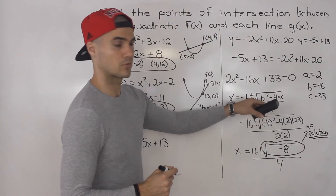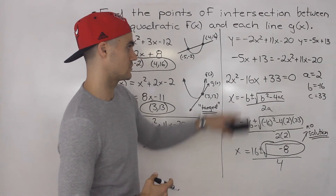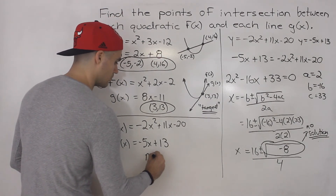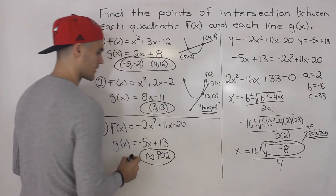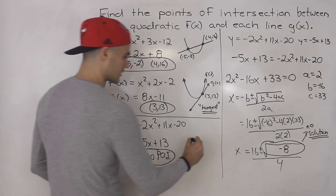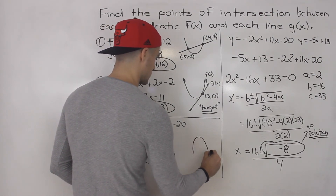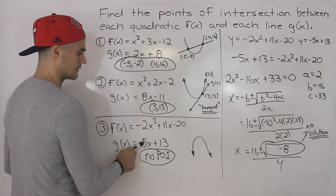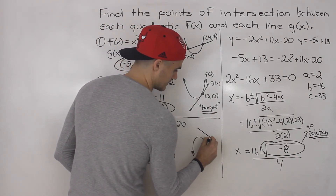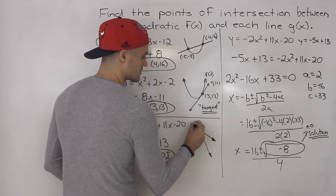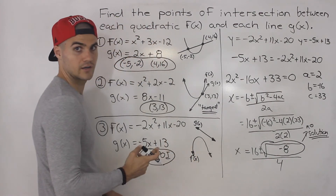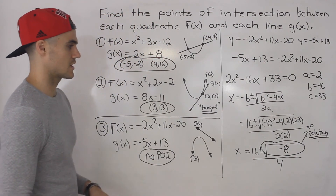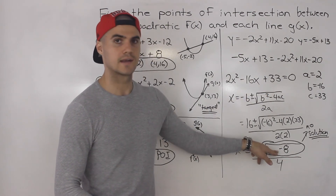That negative value under the square root is the discriminant. When the discriminant is negative, there is no real solution to the quadratic equation. So the answer to number 3 is there is no point of intersection. Visually, this quadratic opens downward because the leading coefficient is negative, and the line slopes downward — they never intersect. This is what no point of intersection looks like.